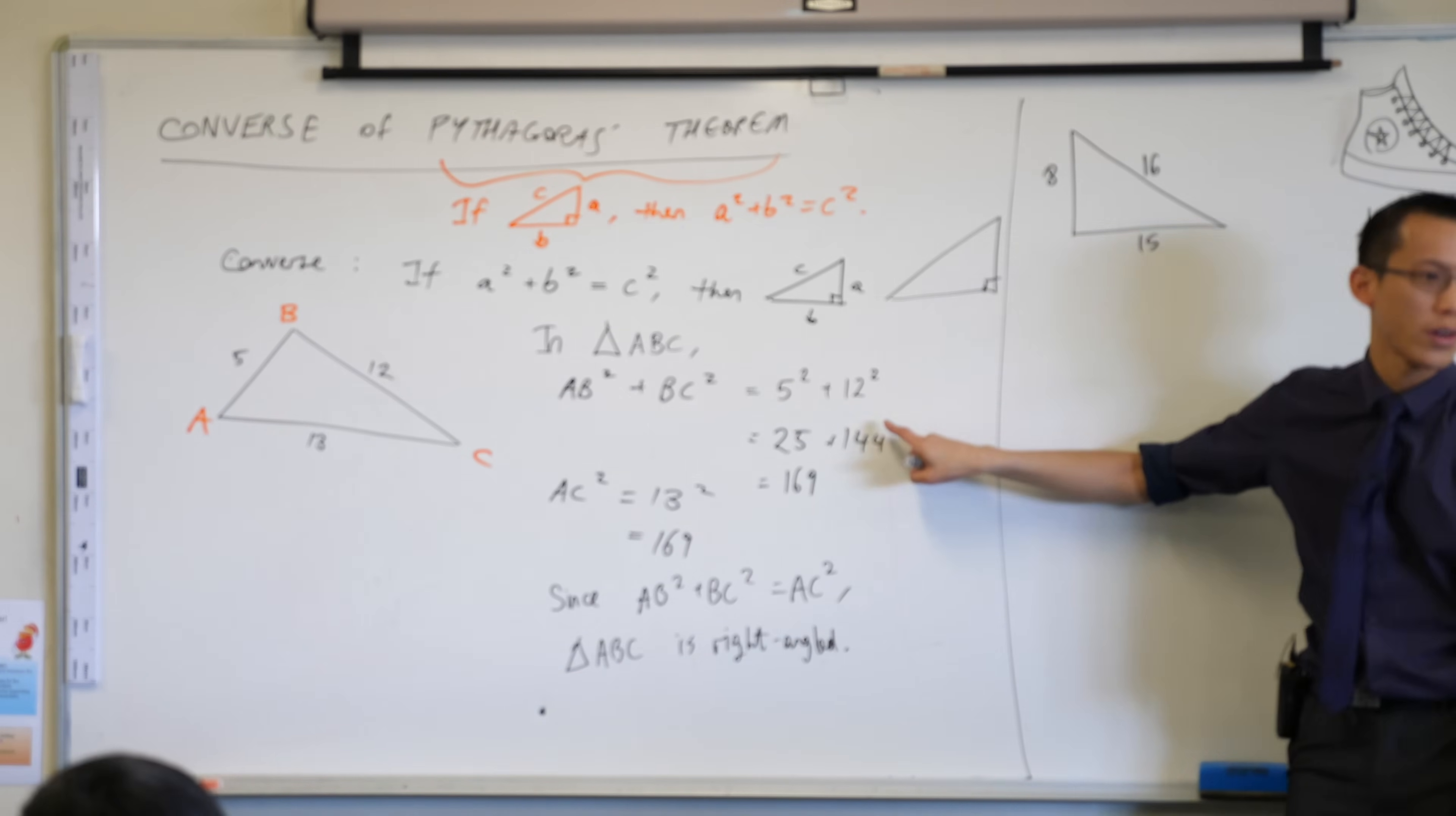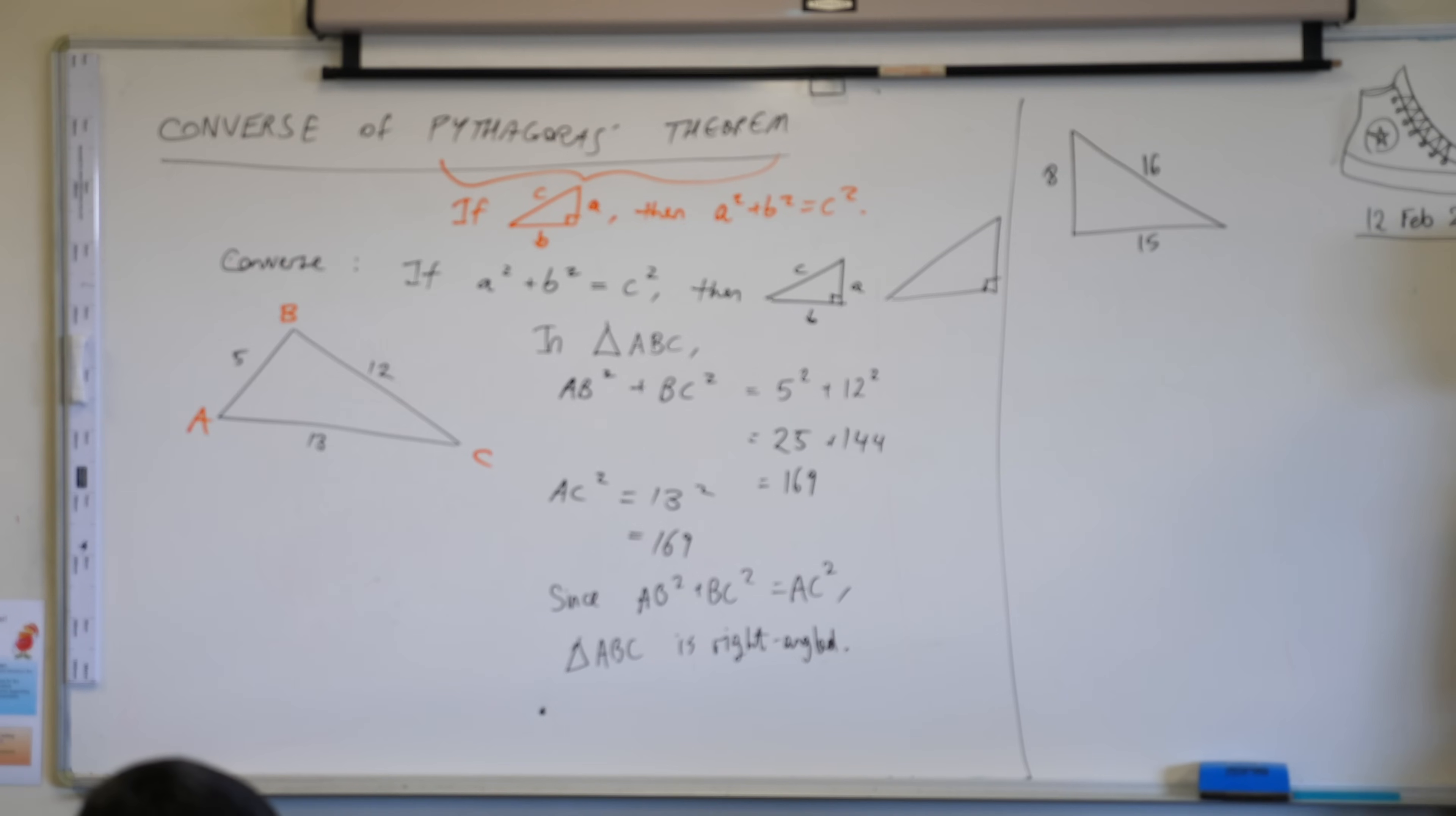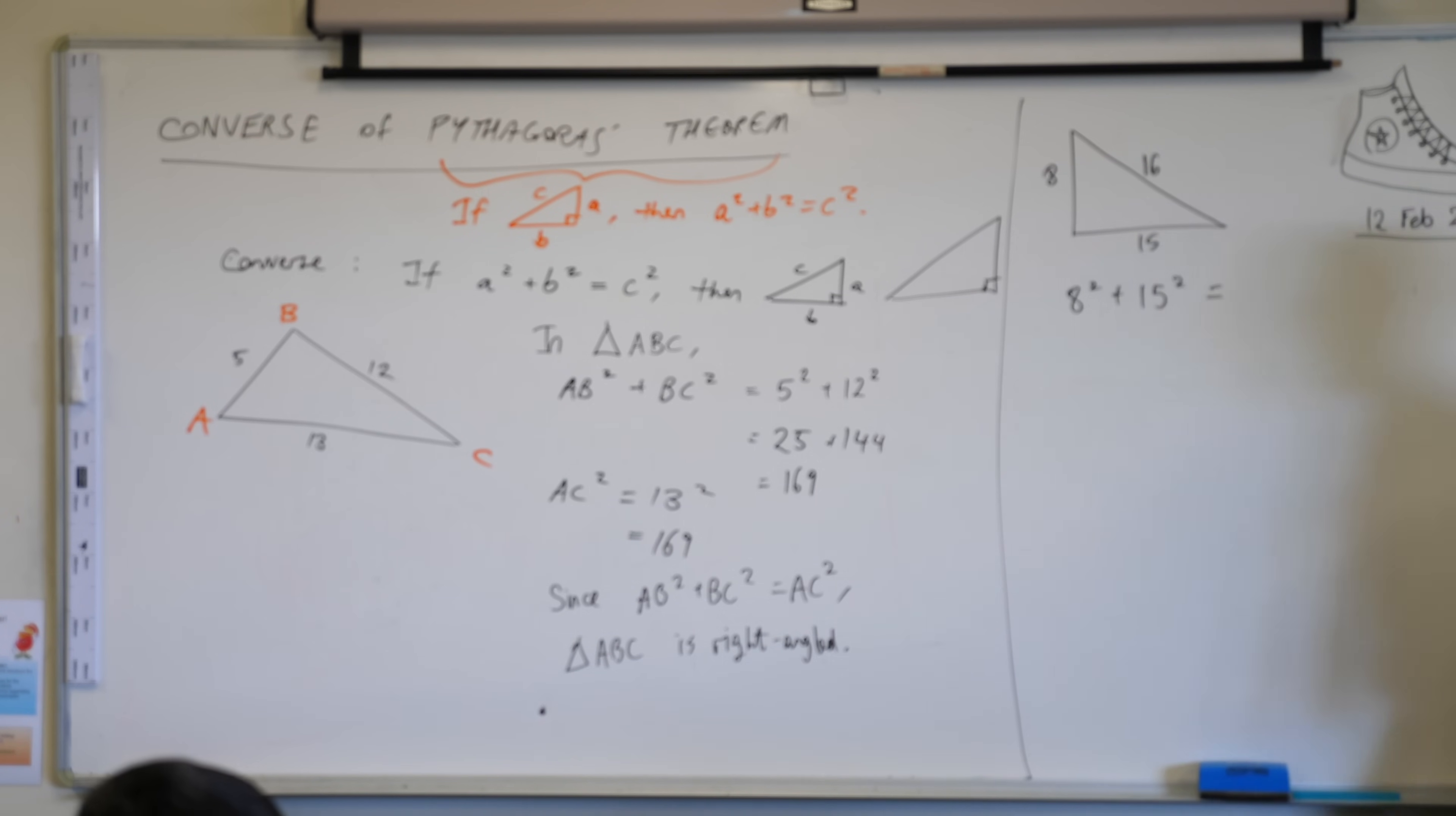So I'm going to go straight to talking about the squares of the two shorter sides. Which ones are those? Which are the shorter numbers? Yeah, go ahead. 8 and 15. 8 and 15, you can just see them in order, right? So I'm going to say 8 squared plus 15 squared, and I'm going to work out what it is.